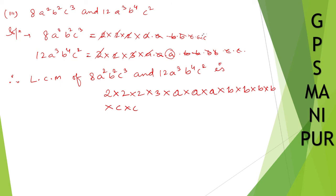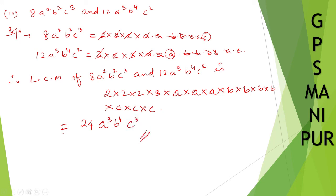So the result is 2⁴ which is 24, giving 24. Then a into a into a is a³, b into b into b into b is b⁴, and c into c into c is c³. So the LCM is 24a³b⁴c³. That's all, thank you so much, we will meet in the next video.